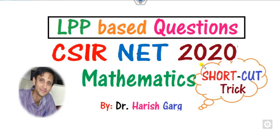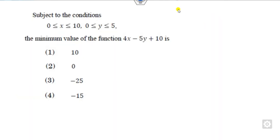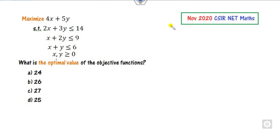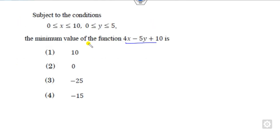Hello everyone, welcome to the CSNA 2020 mathematics question. Today we will see how you can solve the LPP based questions using shortcut tricks. So firstly we will see what those questions are. The first question requires finding the minimum value of a function subject to given constraints. The second asks for minimum and maximum values, and the third asks for the optimal value. These are all from the November 2020 CSNA examinations.